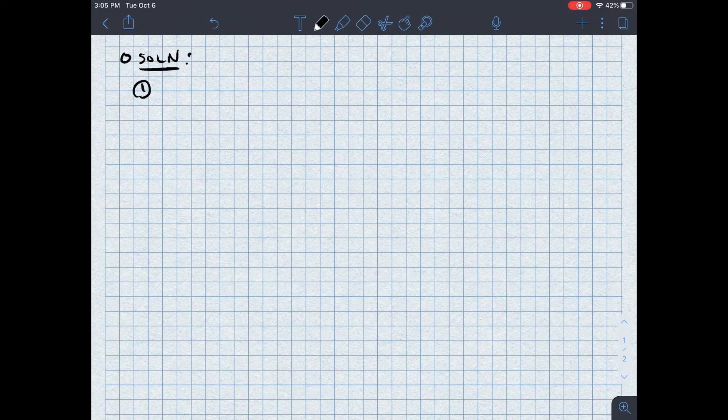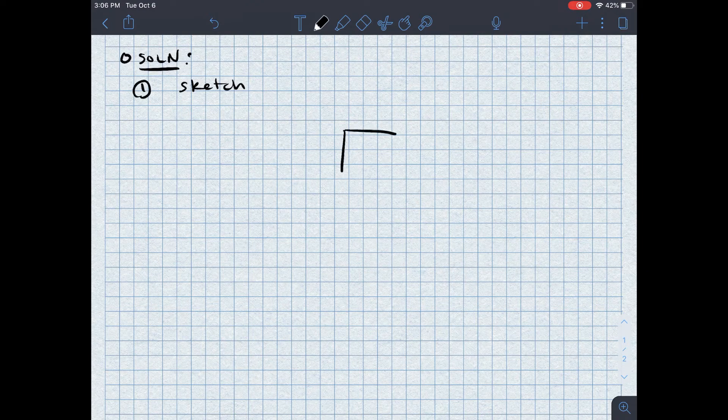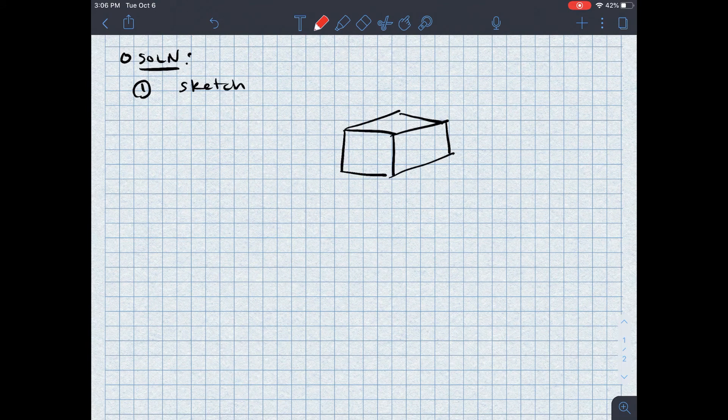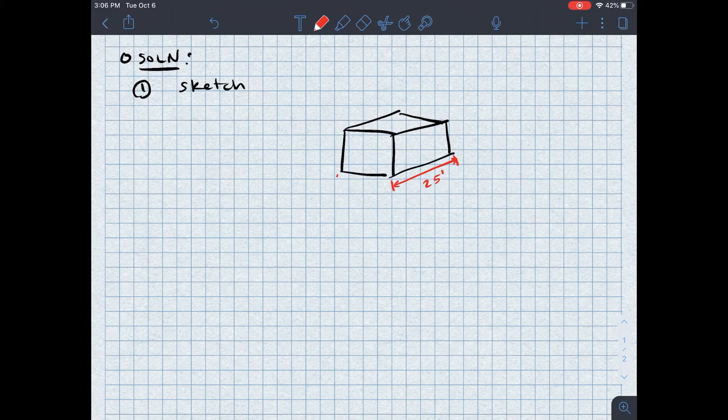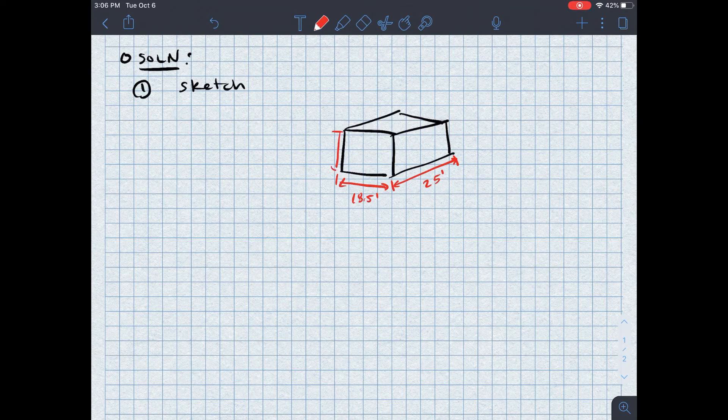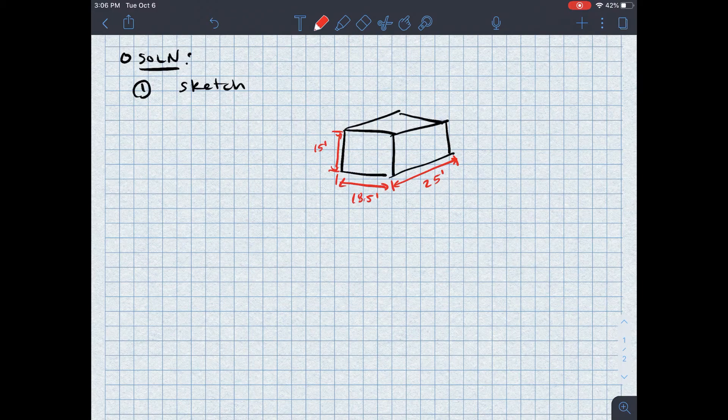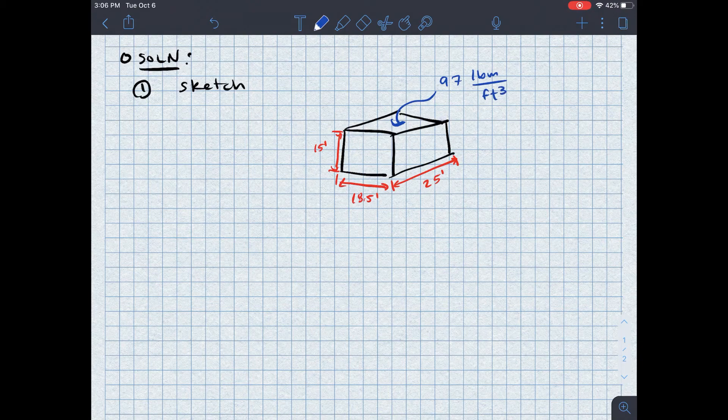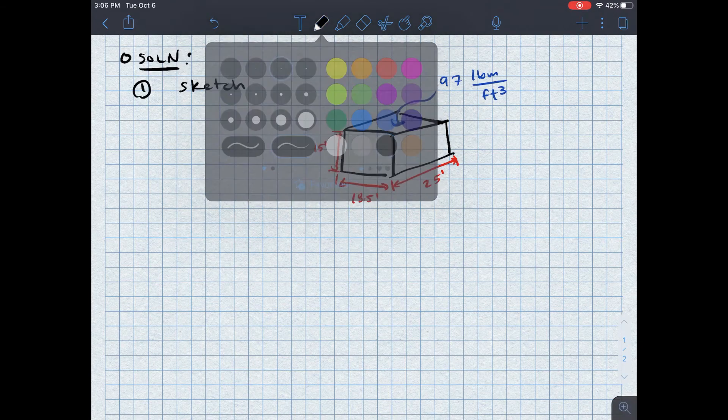Step one in the solvum method is to sketch. So let's start with that. I know that this is a bin. You'll criticize my art skills. Thank you very much. It's a bin. It's rectangular, roughly, and it has the following dimensions. I know that it is 25 feet in one direction. It's 18.5, let's say, on the shorter side here. And I also know that it is 15 feet deep. So I have my dimensions. I'm also going to put into here the density that I was given. I was given that it's 97 pounds mass per feet cubed. So that's my sketch. That's as much information as I can contain here.